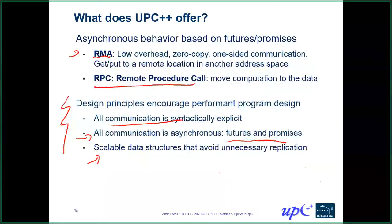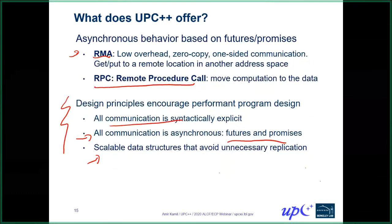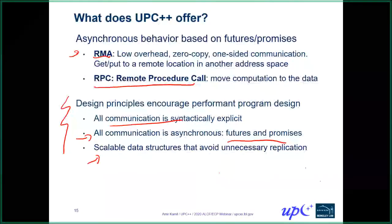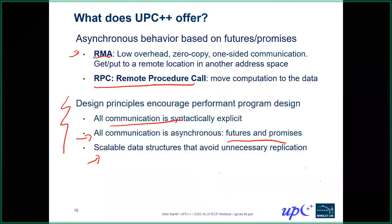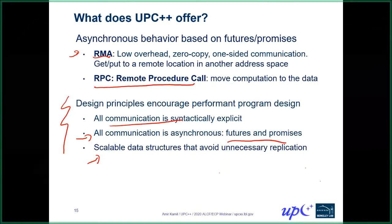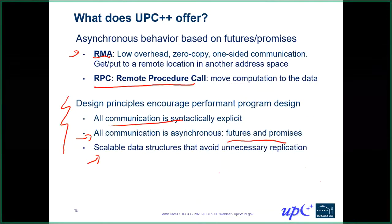Finally, both the implementation and the programming abstractions provided by the library are designed to be scalable. This means we avoid unnecessary replication. At the GasNet-EX level, as well as in UPC++ internal data structures, the design aims to use sublinear memory per process as the number of processors scales. Abstractions we provide, such as distributed objects, are also designed to avoid unnecessary replication.